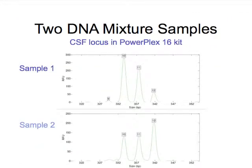We begin with a mixture sample, and sometimes you get more than one mixture sample. Here we're looking at two mixture samples. They could come from the same item as two amplifications, or they could be two different items. Regardless, suppose they contain the same two contributors, but we're seeing very different patterns between sample one and sample two in this STR CSF locus.